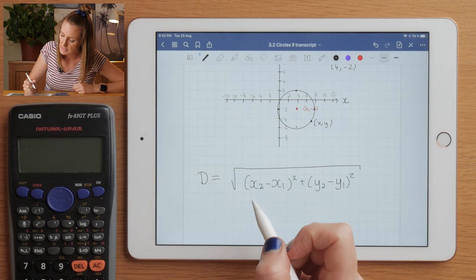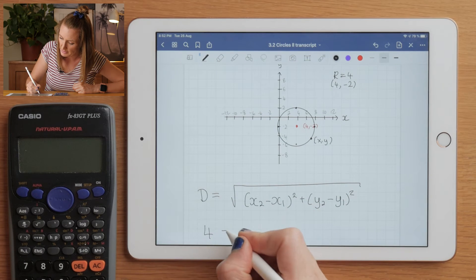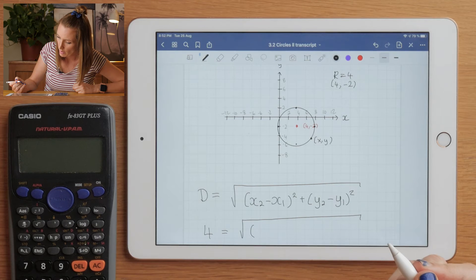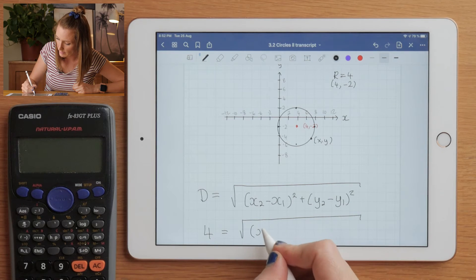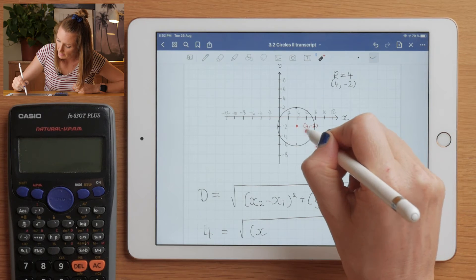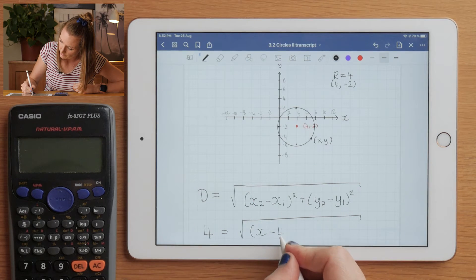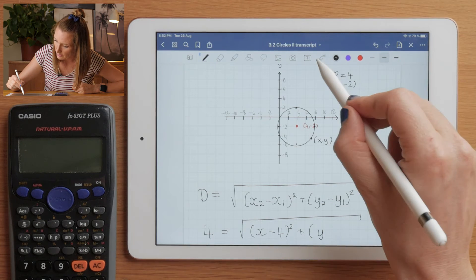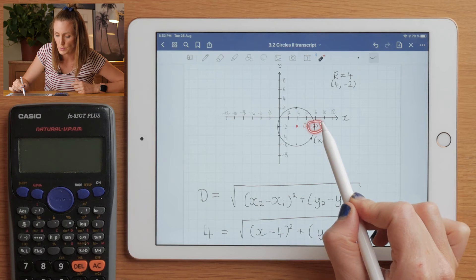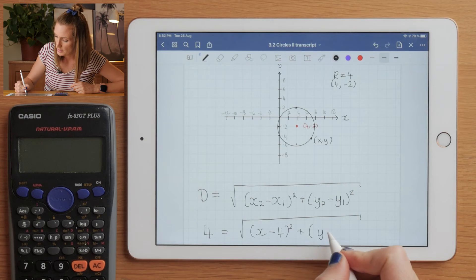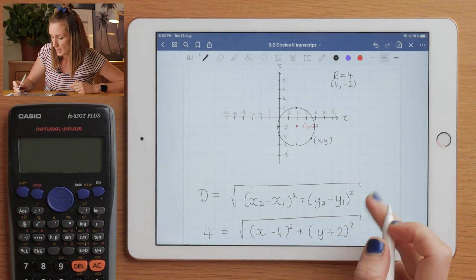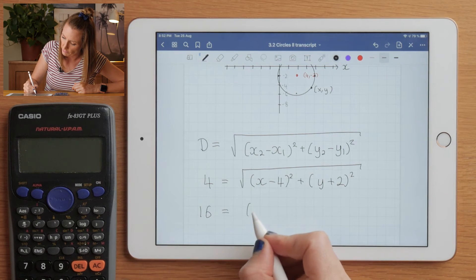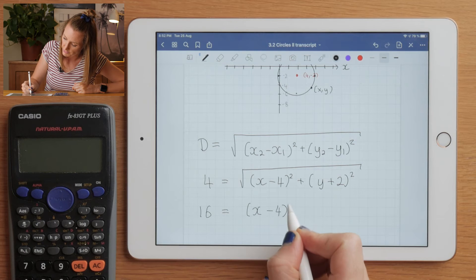the distance has to be 4, right, because that's the radius. And it would be the square root of (x - 4)² plus (y - (-2)), so double minus which would make plus—so (y + 2)². And if you square both sides to remove the square root, that would give you the equation for the circle.